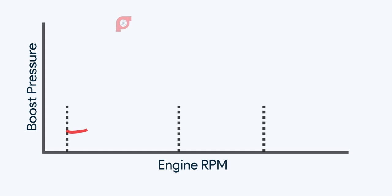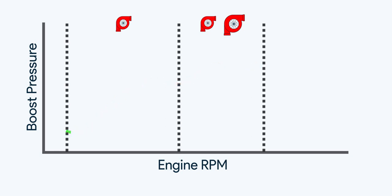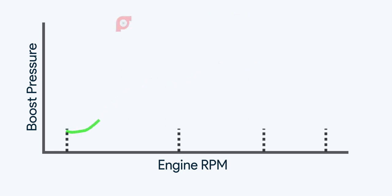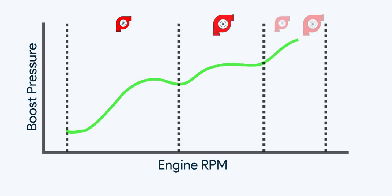In a sequential turbo layout, the first turbo works at lower revs, and both turbos work at higher revs. There is one more modification of this: a small turbo works at lower revs, a bigger one at mid revs, and both together at higher revs.